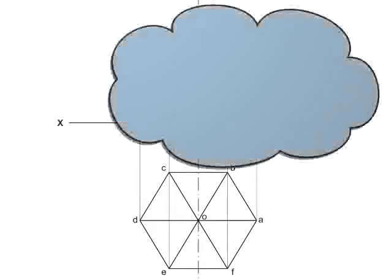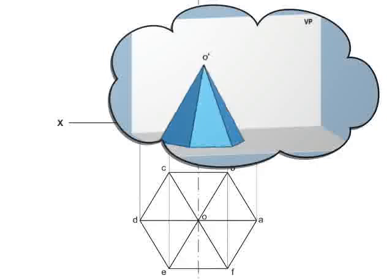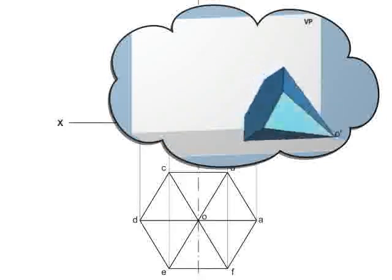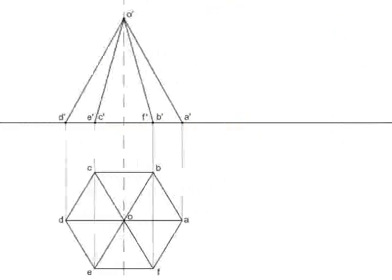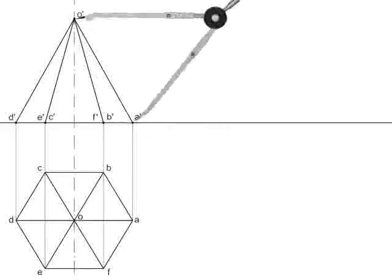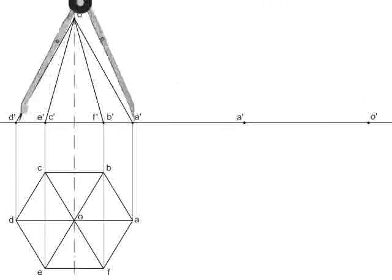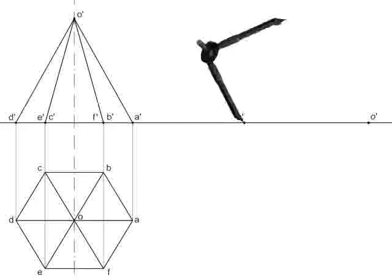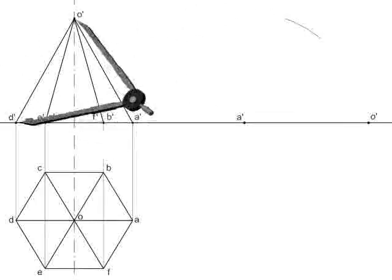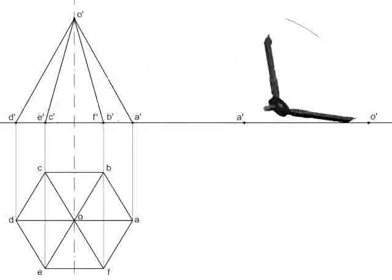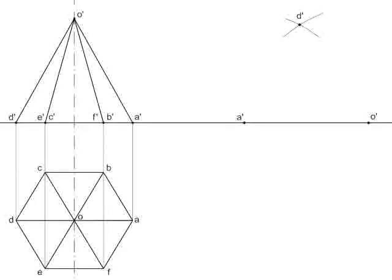Now we will consider the elevation of the pyramid such that the apex is on the XY line. For this, take the length of line A dash O dash and mark it on the XY line. Similarly, taking the measurement from the previous elevation, locate point D dash from A dash and O dash by drawing arcs. Then join points A dash, D dash and O dash.